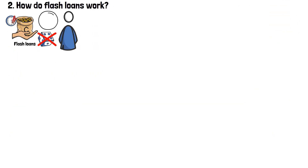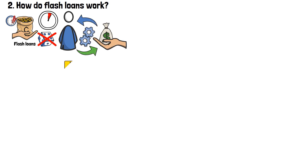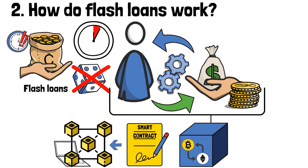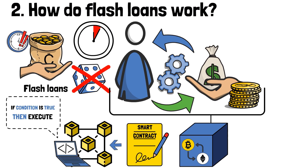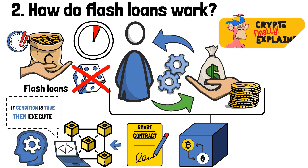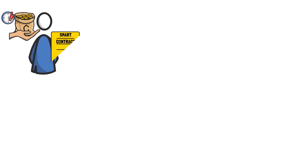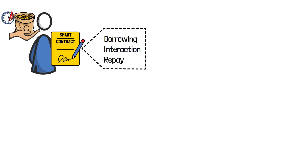Flash loans aren't called this way by chance, as users have extremely limited time to borrow and return funds. The process is completely automated through smart contracts to ensure the assets are received and returned during the same blockchain transaction. Smart contracts are blockchain-based programs that are executed once certain criteria have been met. To acquire a flash loan, the borrower creates a smart contract with three components: borrowing, interaction, and repayment. Let's look into all of these components one by one.